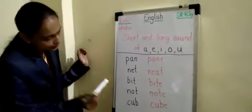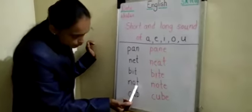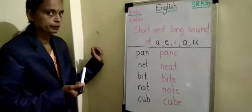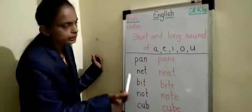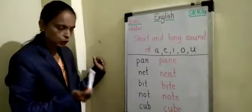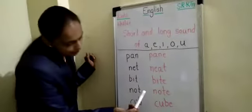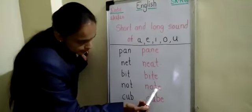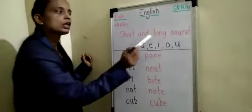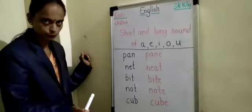Now, look at this next word. N, O, T, NOT. Okay. NOT is a short sound of O. And N, O, T, E, NOTE. NOTE is a long sound of O. Okay.